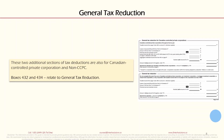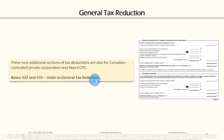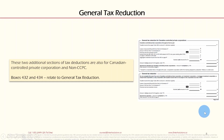Section 6 is General Tax Reduction. These additional tax deduction sections apply to both Canadian Controlled Private Corporations and non-CCPCs. Boxes 432 to 434 relate to general tax reduction. The section is divided into two parts: the general tax reduction for CCPCs and the general tax reduction for non-CCPCs.